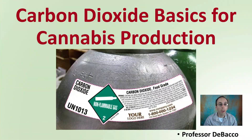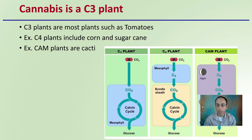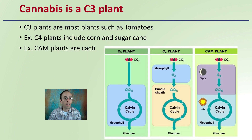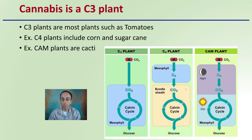Let's look at carbon dioxide basics for cannabis production. Starting first, you have to understand that cannabis specifically is what's called a C3 plant, similar in structure for its photosynthetic process as tomatoes would be. The other types are called C4 plants — they include corn and sugarcane — and CAM plants are cacti. There are different processes they go through as they prepare carbon dioxide for the Calvin cycle. C3 plants have a direct incorporation of carbon dioxide into the Calvin cycle.